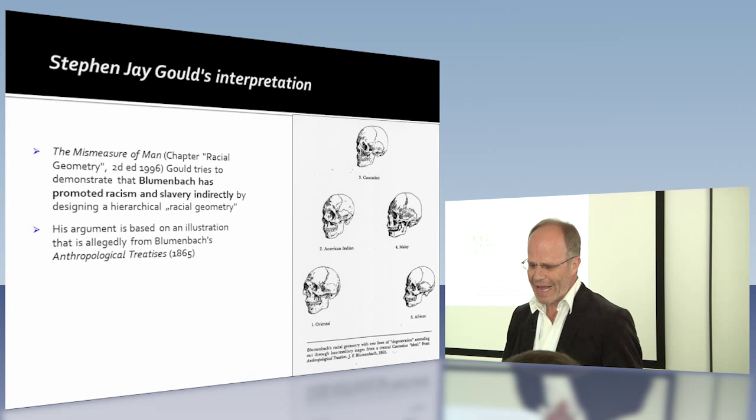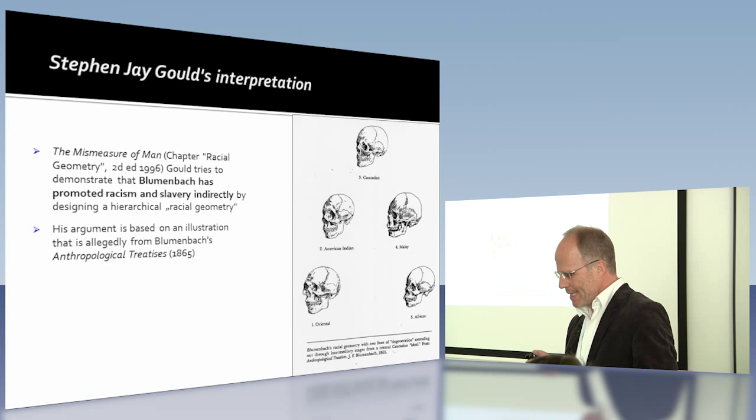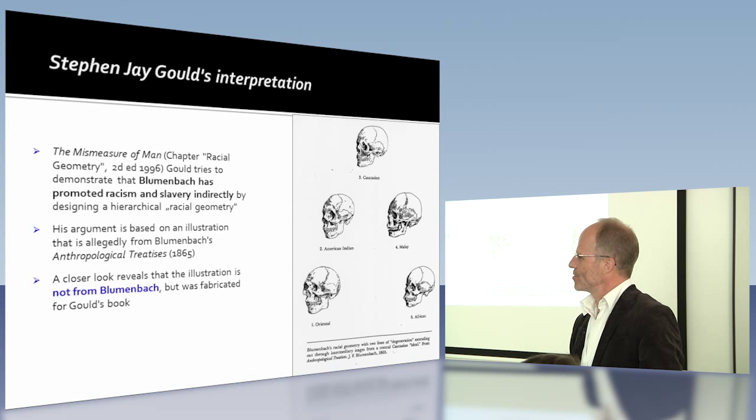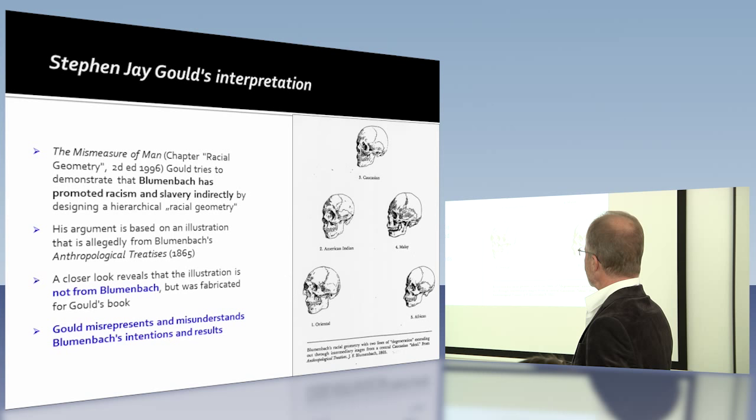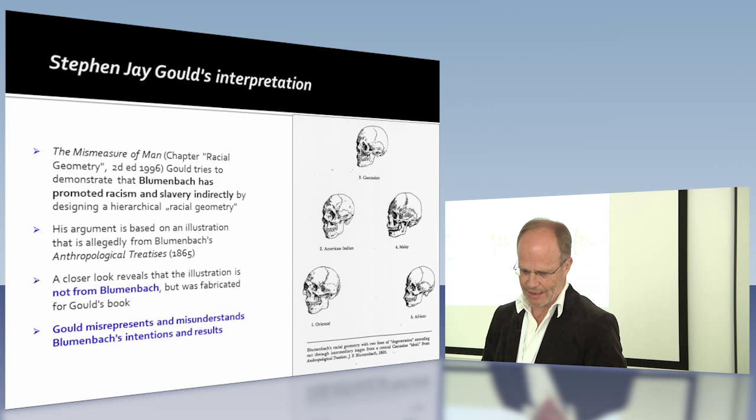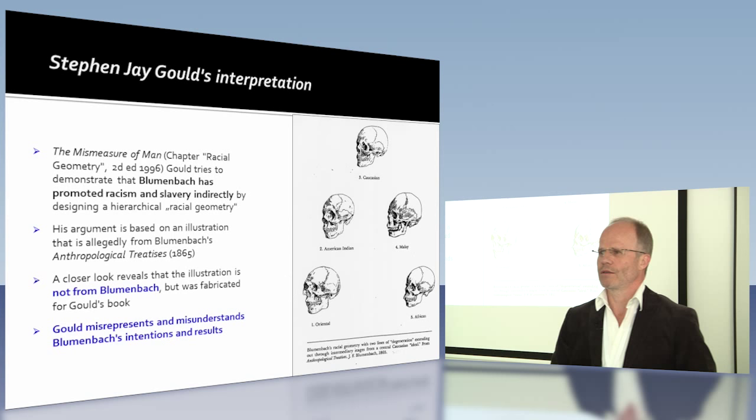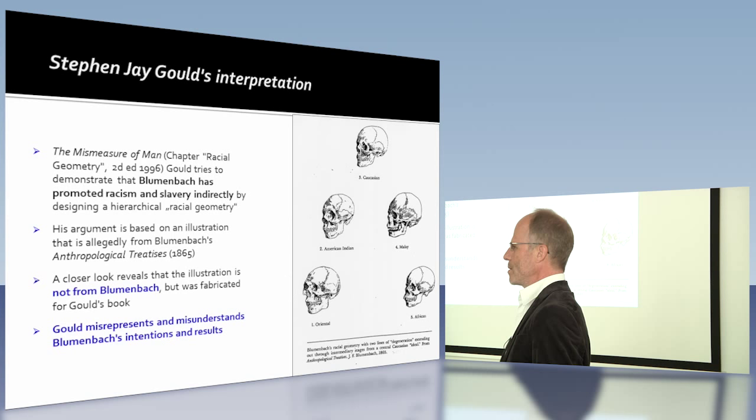In this short controversy I had with Gould, he then claimed, well, the illustration may not be from the original, but his argument still is right. And my feeling was that Gould actually misrepresented and misunderstands Blumenbach's intentions and results. And now I want to discuss if this is right or not.